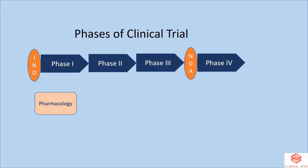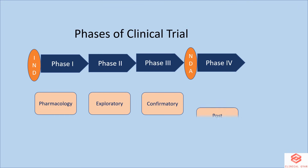Phase 1 is also known as human pharmacology, as it looks for pharmacokinetic and pharmacodynamic parameters. Phase 2 is also known as the exploratory phase, as it explores the safety and efficacy of the drug. Phase 3 is also known as the confirmatory phase for safety and efficacy of the drug. Phase 4 is also known as post-marketing study or surveillance, as it happens after marketing of the drug.